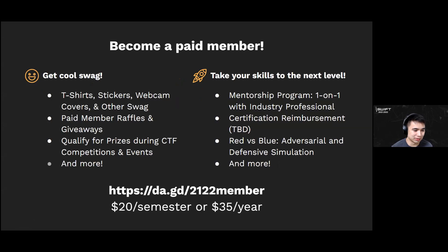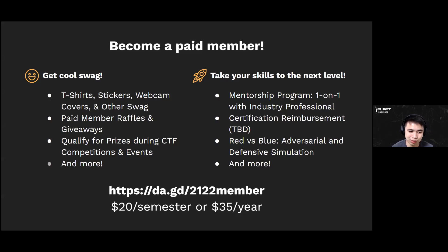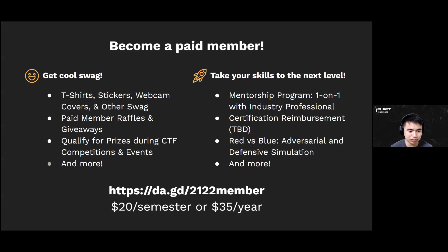It's not too late to become a paid member. You're going to get SWIFT swag — like this tech symposium shirt, which is super comfy. You can qualify for prizes; we actually have Raspberry Pis with everything included, worth about a hundred bucks each. As a paid member you have a chance to win one. We also have a mentorship program where you can get one-on-one mentoring with an industry professional, as well as access to our RVB beta testing — adversarial defensive simulation used to train high schools. You can register at this link — twenty dollars a semester or thirty-five dollars for the entire year.